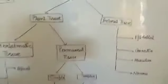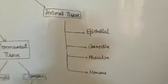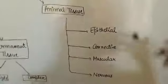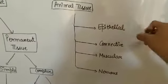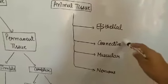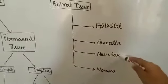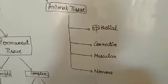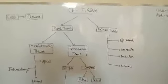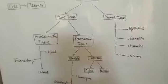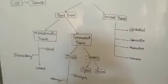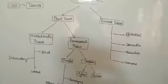Animal tissue consists of four types: epithelial tissue, connective tissue, muscular tissue, and nervous tissue. In this whole chapter we will be studying the main characteristic points of all these categories. So let's get into the detail of the chapter.